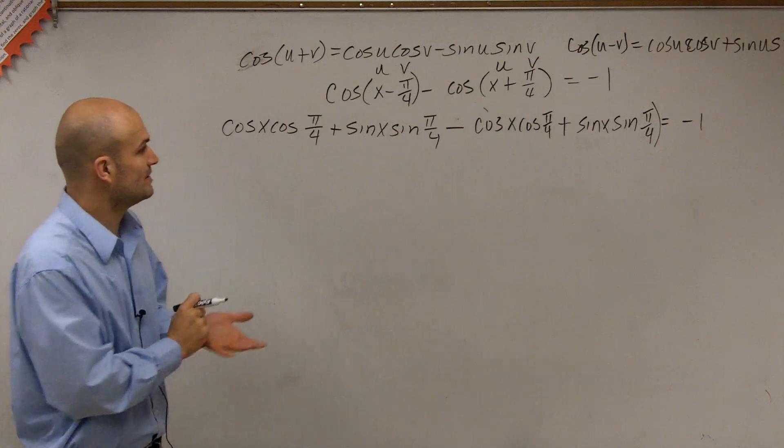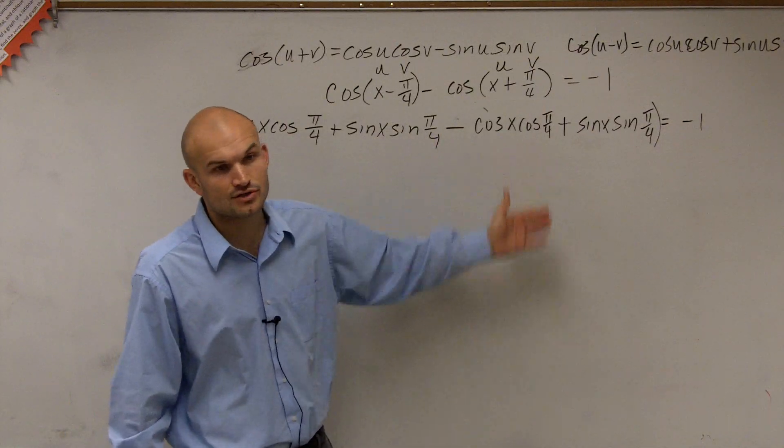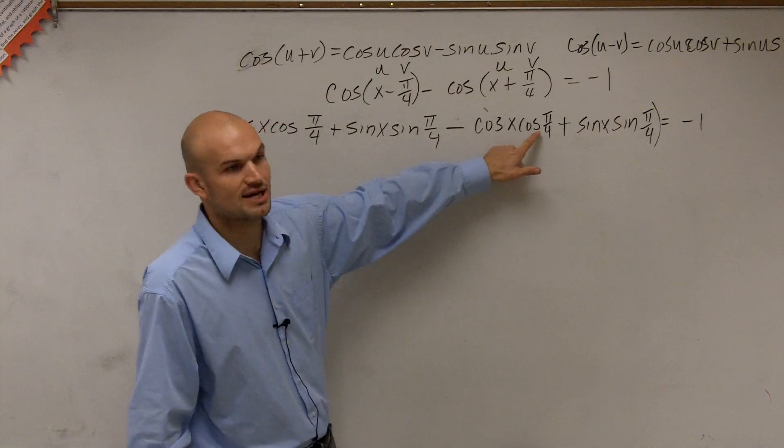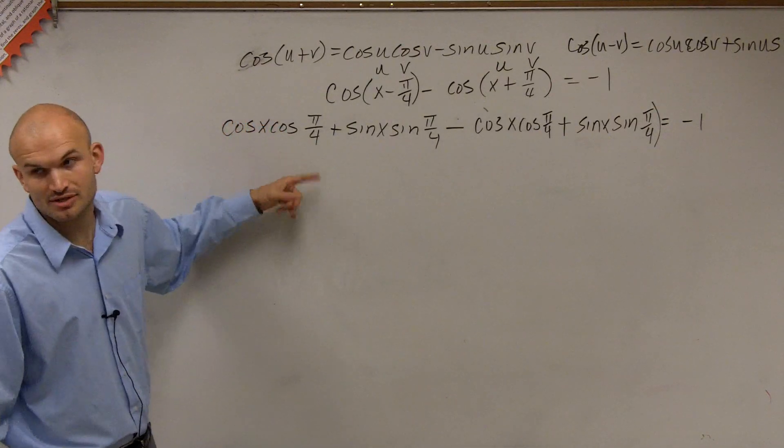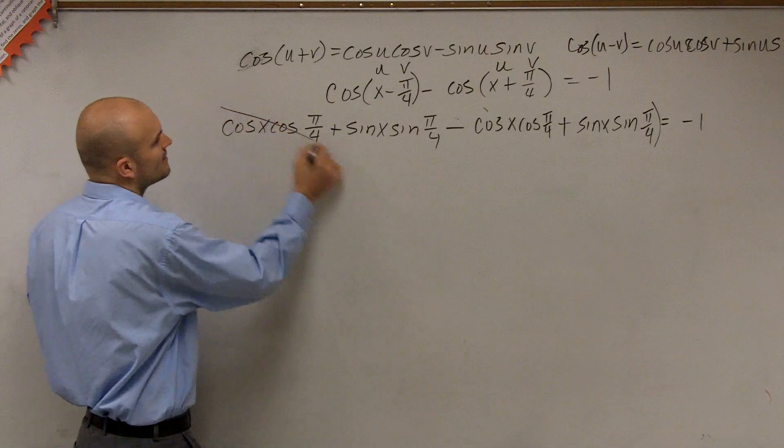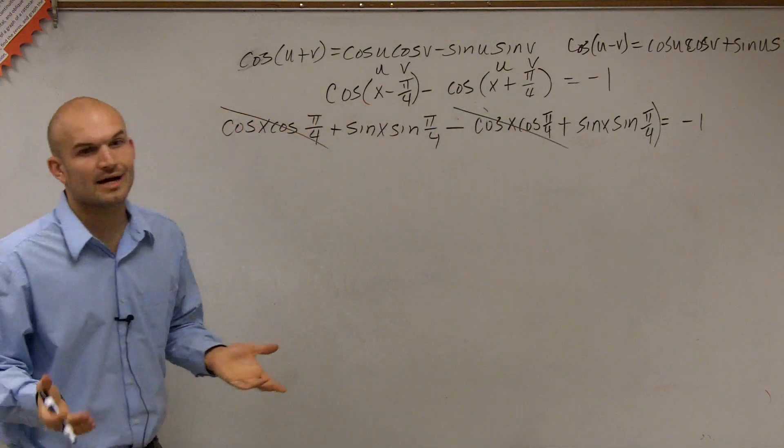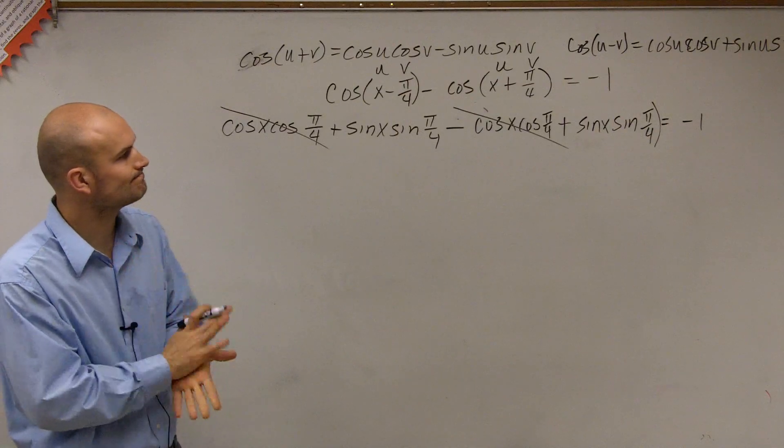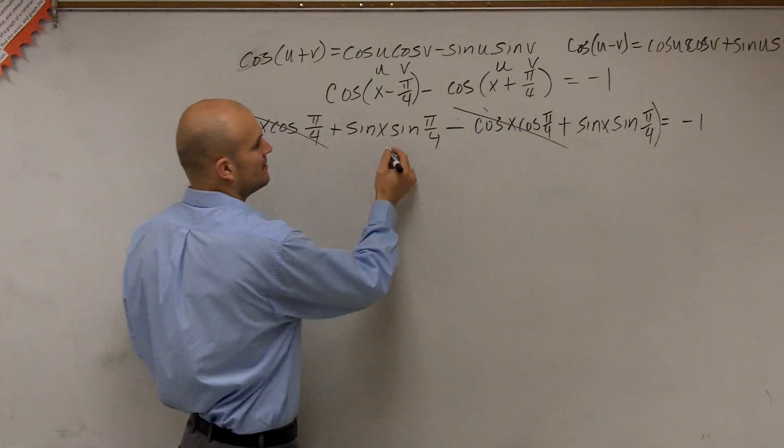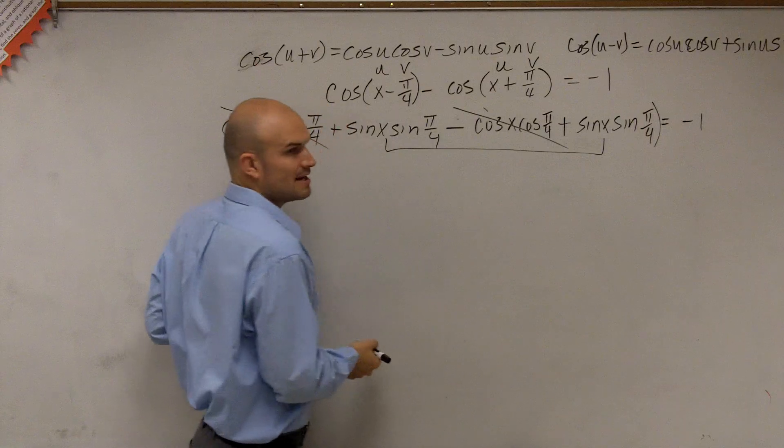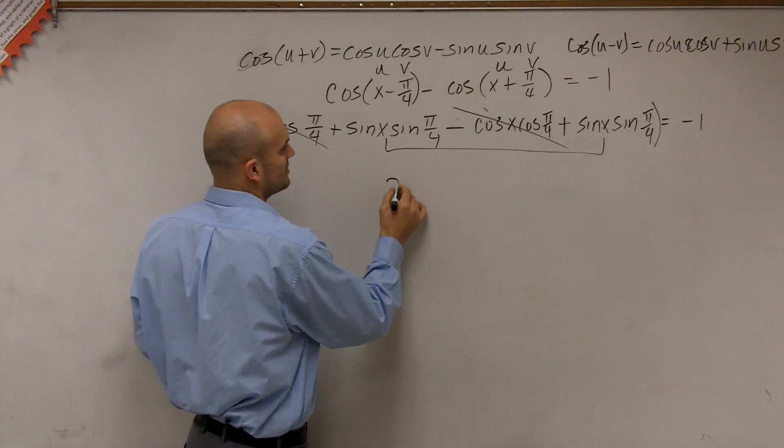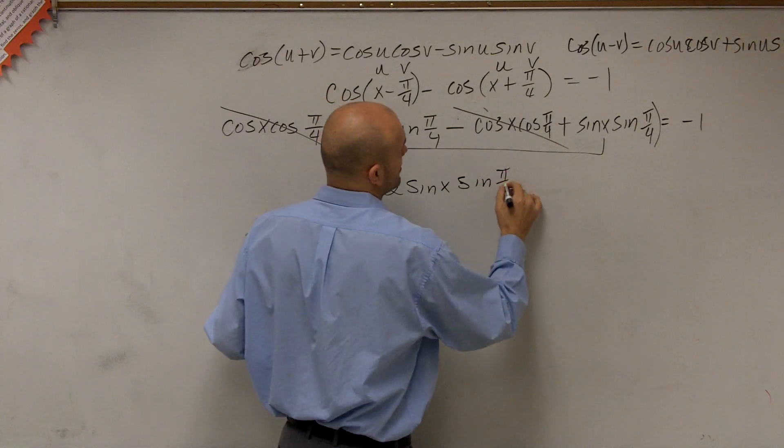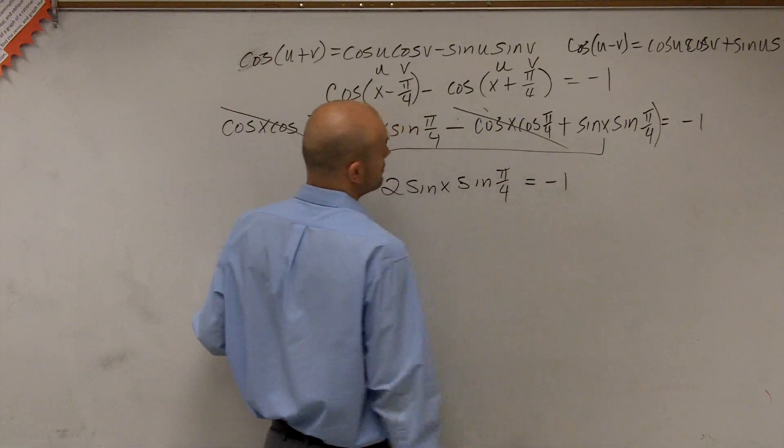So before we even evaluate, we notice that we have a negative term, right? And we can say, all right, can we even simplify this? Do we have a negative cosine of x, cosine of pi over 4, and a positive 1? So I don't need to evaluate, and I already know that these two terms are going to add up to 0. Then these two terms are exactly the same, right?